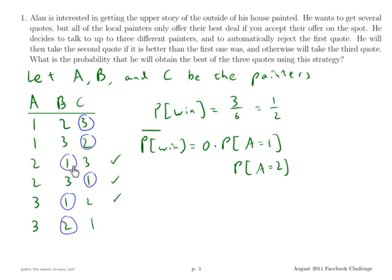If A gave me the second best bid, then what do I do? I wait until I get somebody who gave me an even better bid than that. So probability of winning in that situation is one.